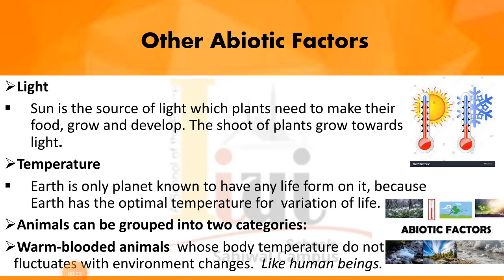Now we are going to discuss about the abiotic factors of the environment. We will discuss the categorization of animals into two groups according to their body temperature fluctuation — whether their internal temperature changes or does not change according to the external environment. First of all, we have warm-blooded animals.